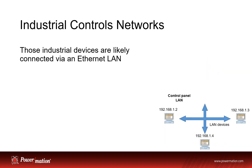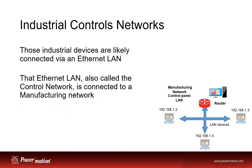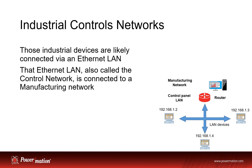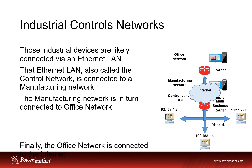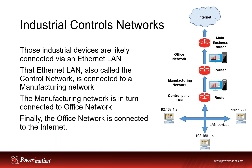The industrial devices in the control panel are likely connected via ethernet LAN, and this is called the industrial control network. The industrial control network is buried deep inside of a company's network. To get access to the internet, the traffic starts at that industrial control network, then goes through the manufacturing network, then the office network, and finally hits the internet.